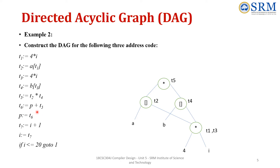The next statement is p = t6. Already t6 exists — p = t6 means whatever expression is applicable to t6 is also applicable to p. So just attach p next to t6 on that node, giving the label t6, p.